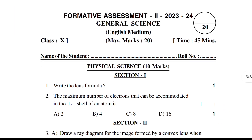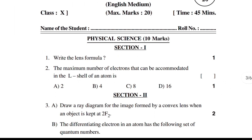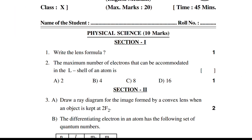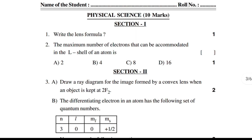First question: write the lens formula. The maximum number of electrons that can be accommodated in the L shell of an atom. In the third section, draw a ray diagram of the image formed by a convex lens.